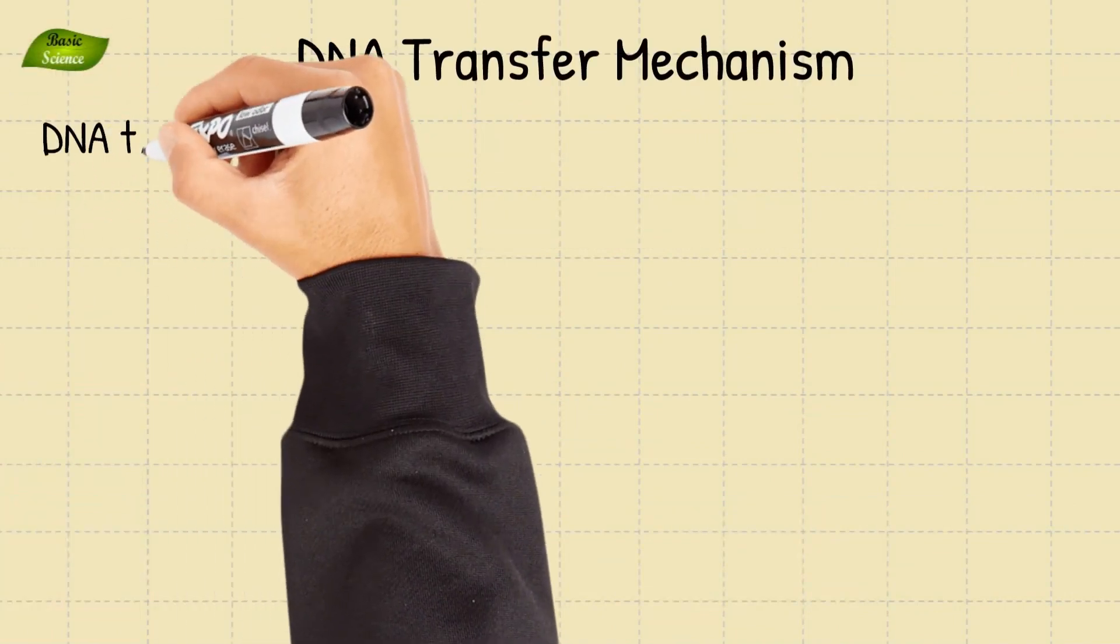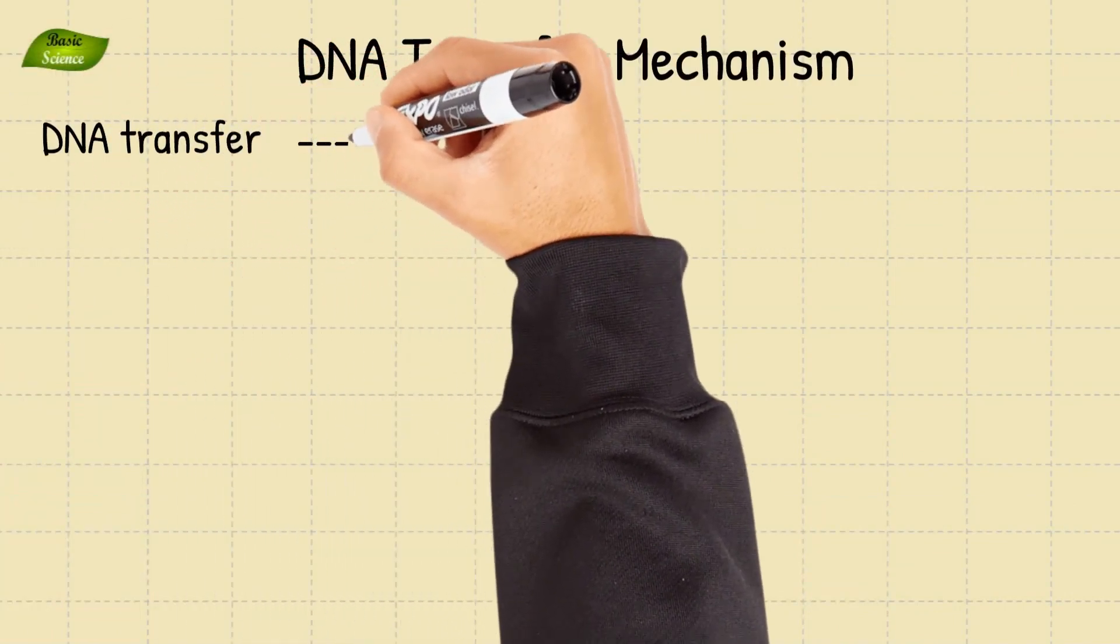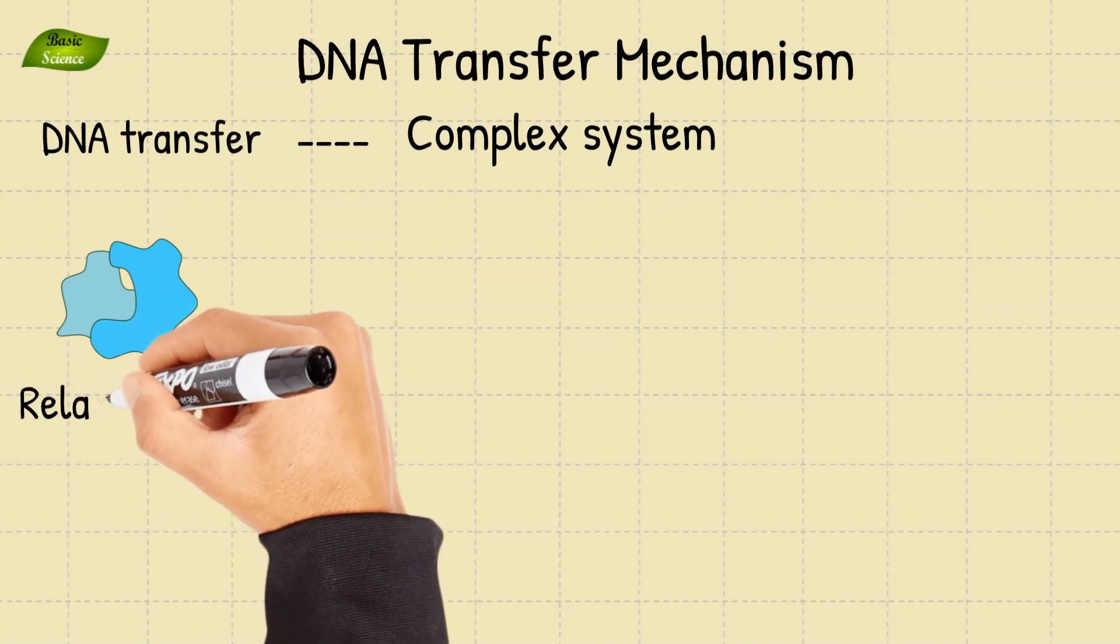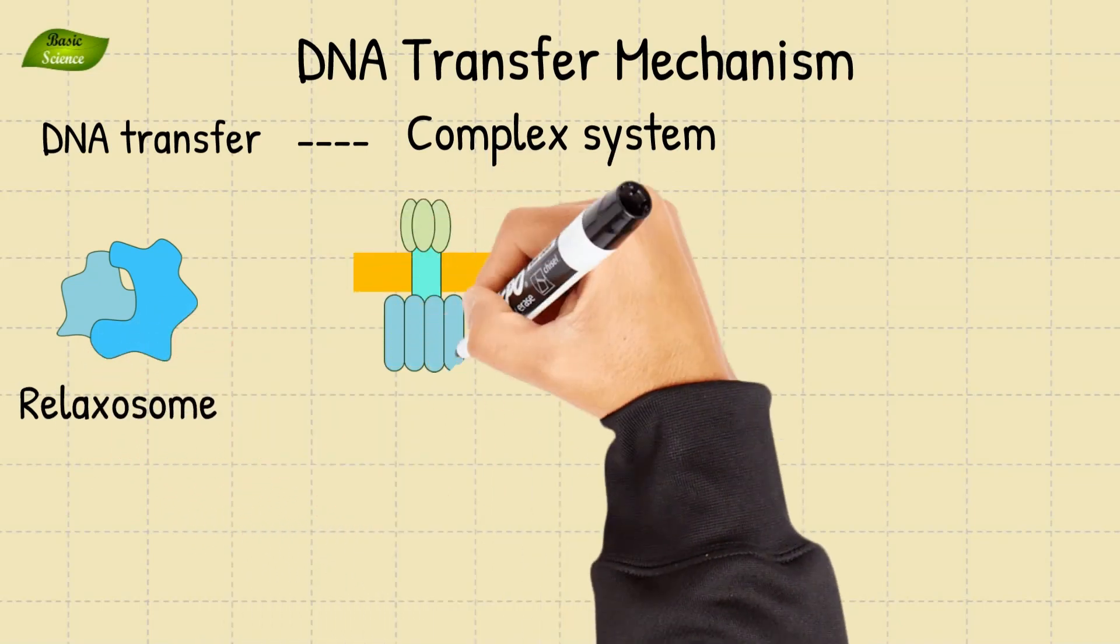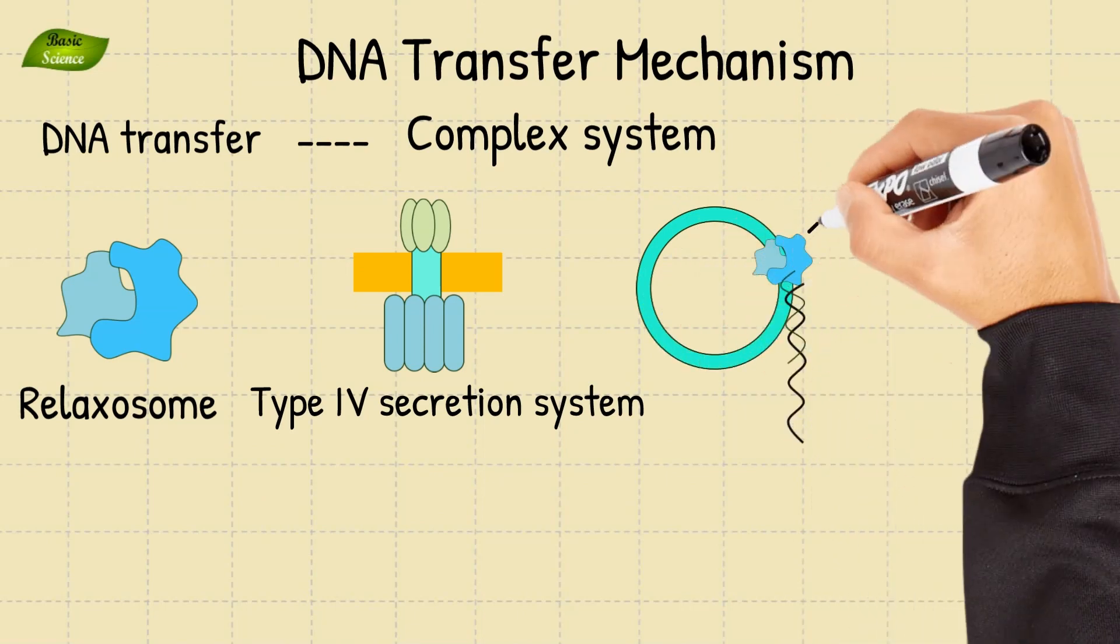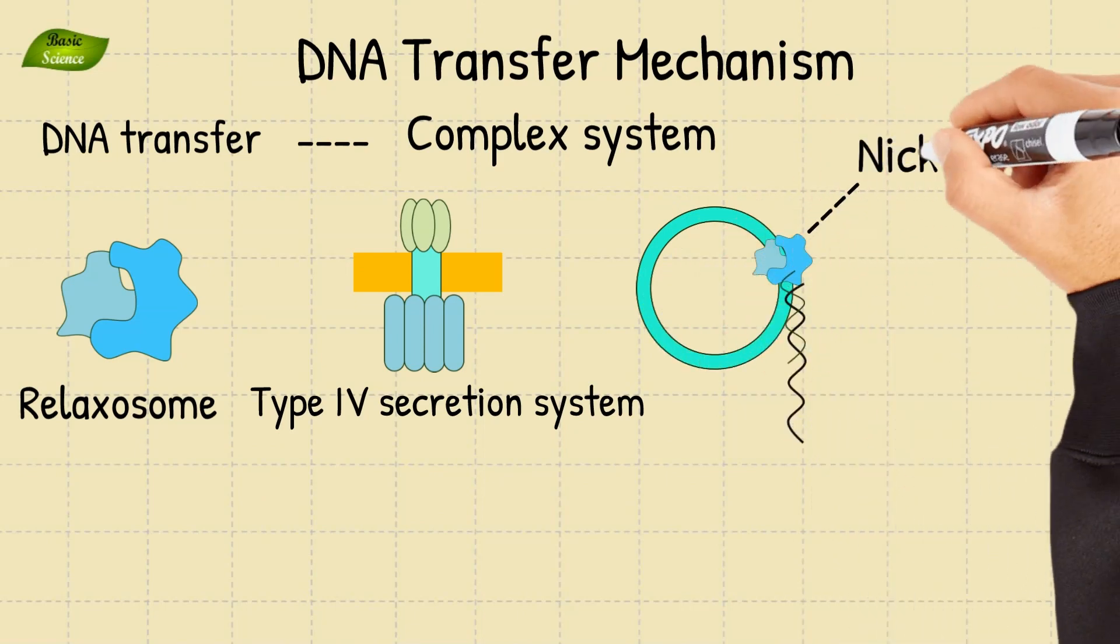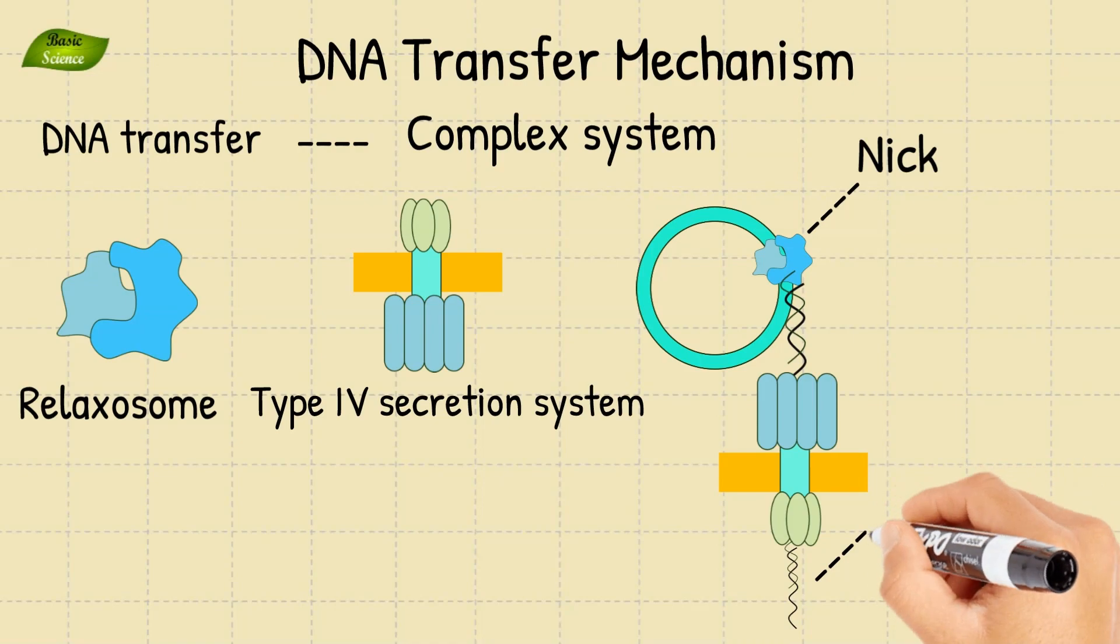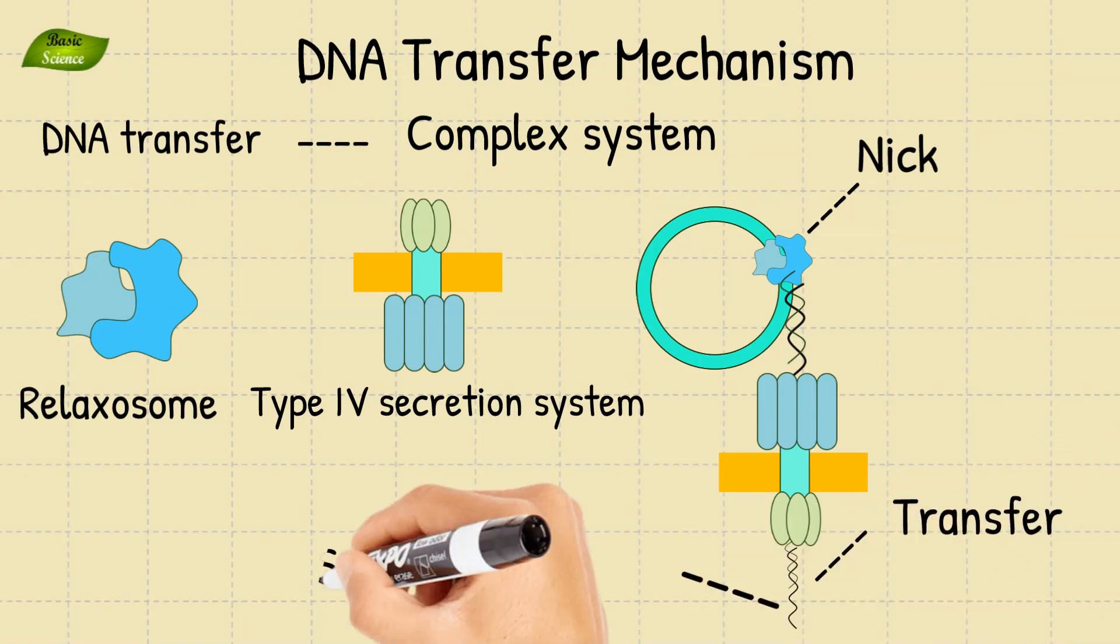The conjugative DNA transfer is mediated by a complex system, primarily the relaxosome and the type 4 secretion system. The relaxosome nicks the plasmid at the origin of transfer and the type 4 secretion system facilitates the transfer of a single DNA strand to the recipient cell.